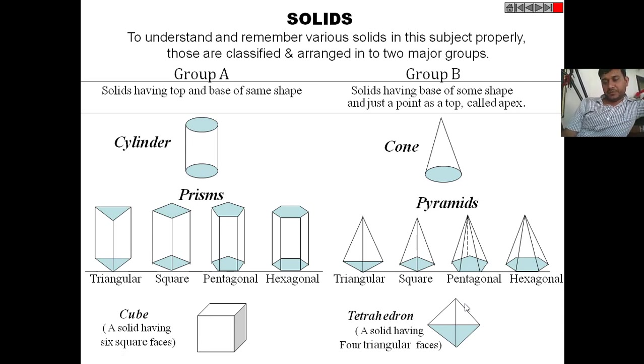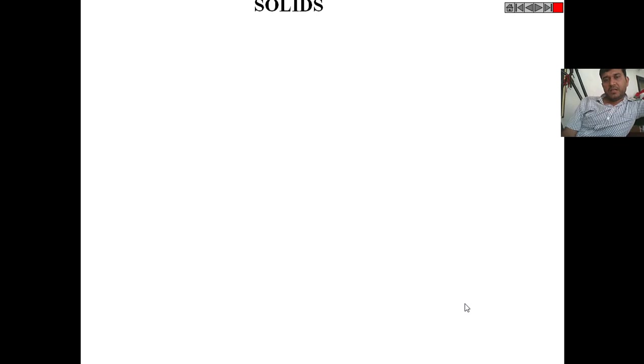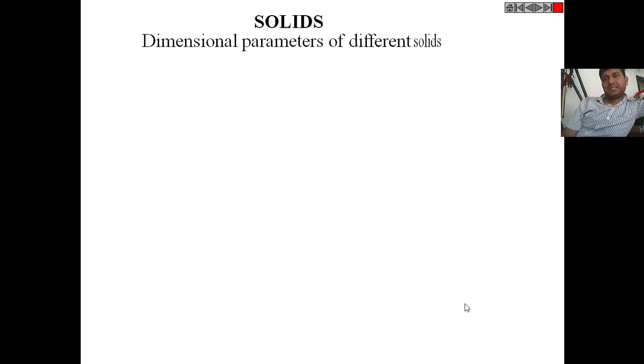If we have a triangular-shaped base with triangular faces — four triangular faces in a single solid — it is known as a tetrahedron. Now let's see the dimensional parameters of these different solids.